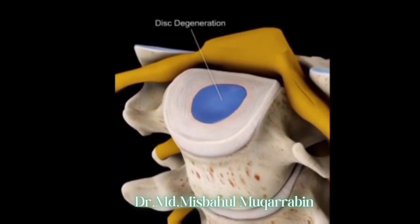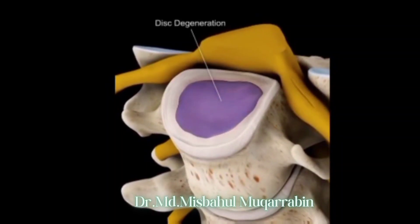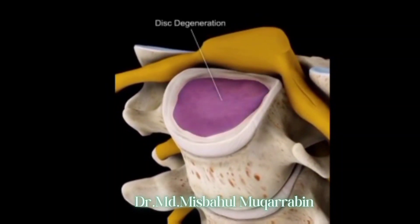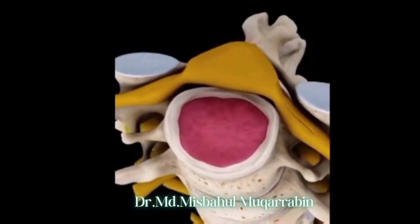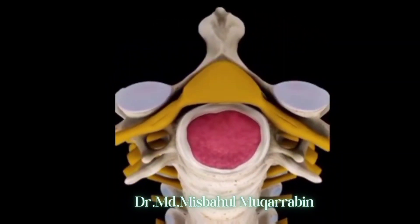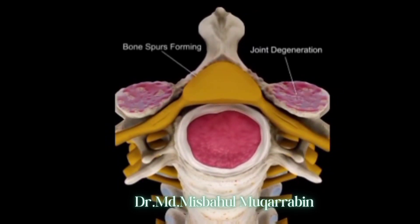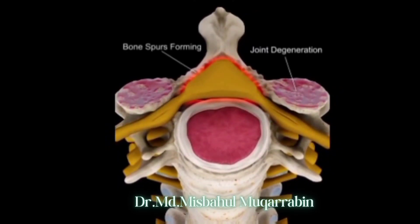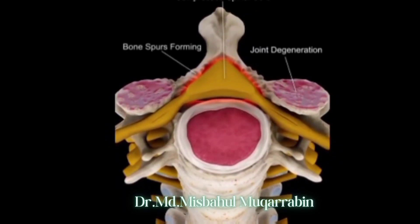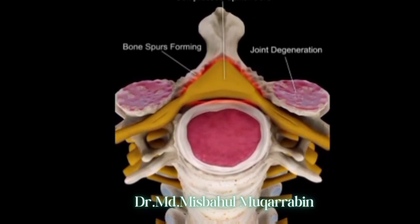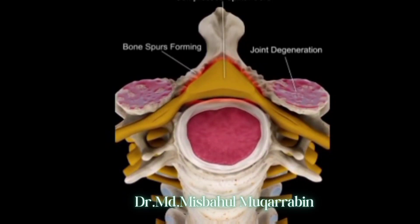Spinal stenosis is a condition that is caused by disc degeneration in the cervical spine. This results in the formation of bone spurs which cause the narrowing of the spinal canal and vertebral foramen. The narrowing of these openings causes compression of the spinal cord and nerve roots.